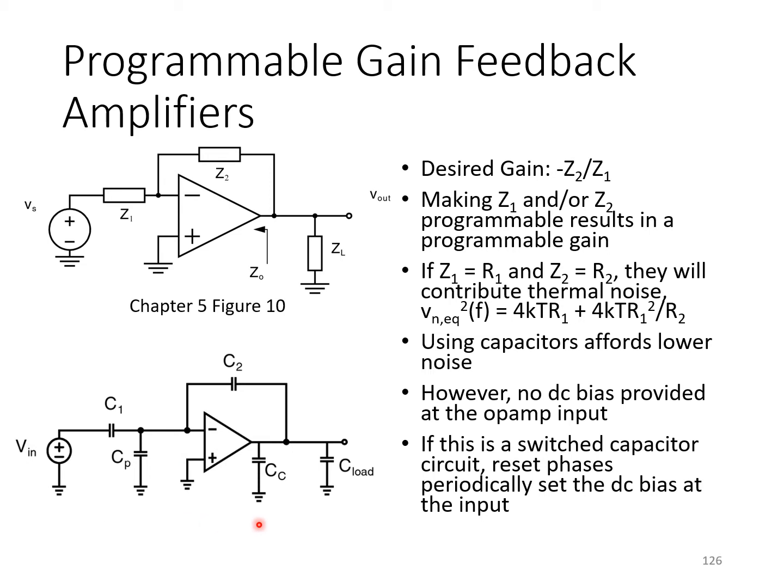However, just looking at this circuit on its own reveals a problem. For example, if you consider this node right here, you'll notice that there's no DC connection to this node. In a sense, it's a floating node. So there's no way to ensure that its DC operating point will be at a voltage that ensures proper operation of the op-amp itself.